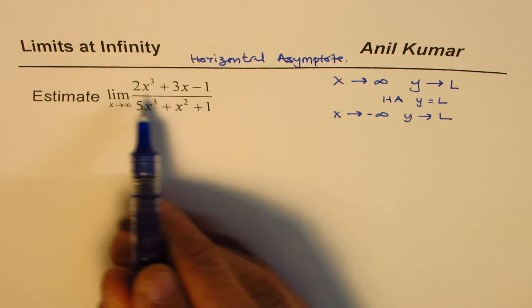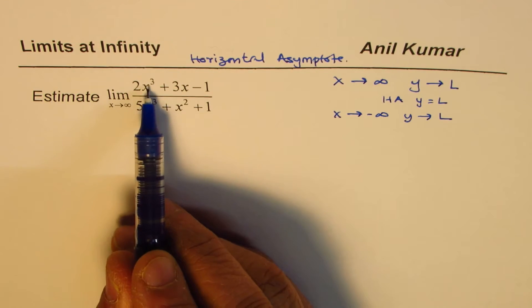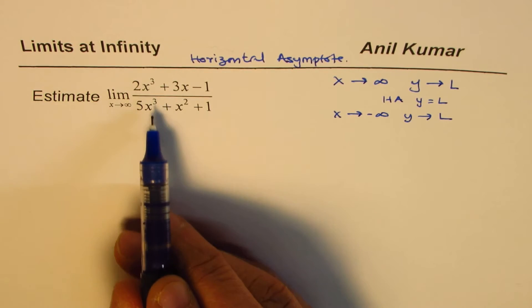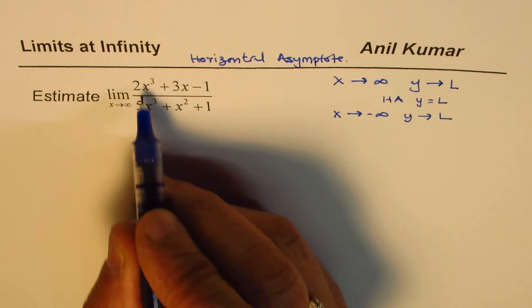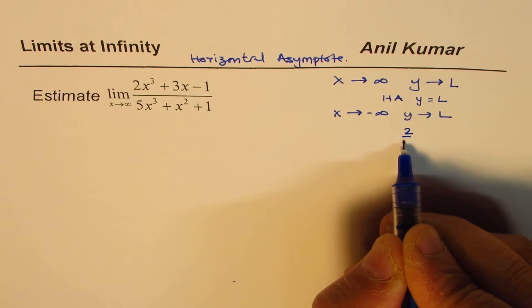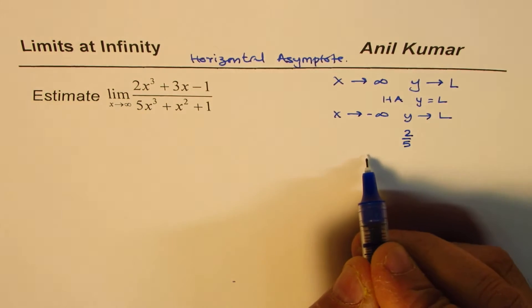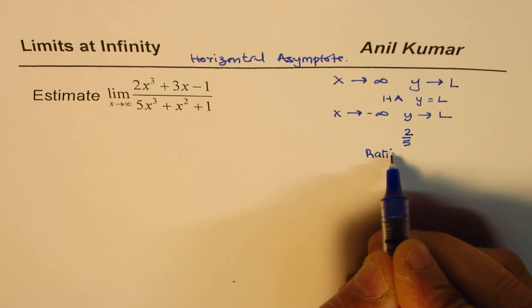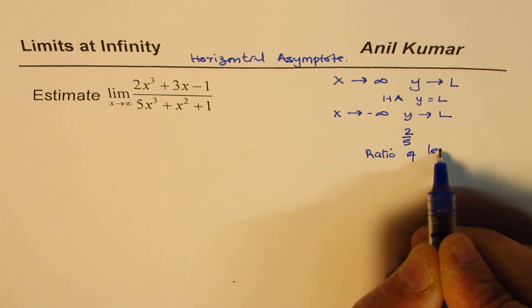For some of you who know the tricks, you will know that if the degrees of numerator and denominator are same, then we expect this answer to be 2 over 5. It is ratio of leading coefficients.